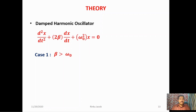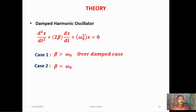First, when β > ω₀, the damping exceeds the restoring ability — this is the over-damped case. The mass will not oscillate; its displacement decreases exponentially with time and comes to rest. Second, when β = ω₀, the damping equals the restoring ability — this is the critically damped case. Again no oscillation occurs, but the displacement decays to equilibrium much faster than in the over-damped case.